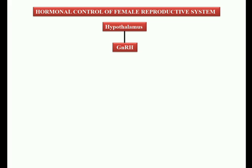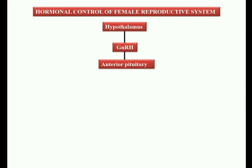Now we start with hormonal control of the human reproductive system, similar to the hormonal control of the male reproductive system. The first part responsible here is the hypothalamus. The hypothalamus is a neurosecretory structure that secretes a particular hormone called GnRH — Gonadotropin Releasing Hormone. This GnRH stimulates the anterior pituitary, also known as the adenohypophysis.